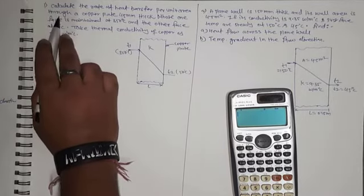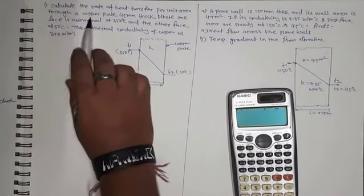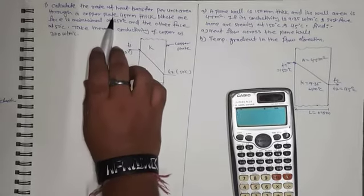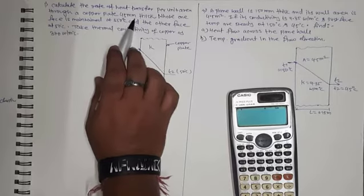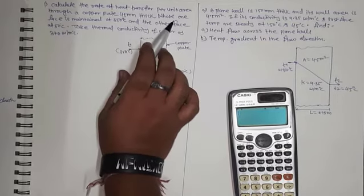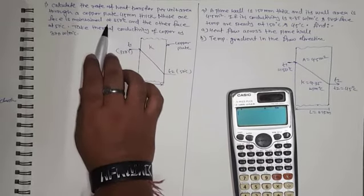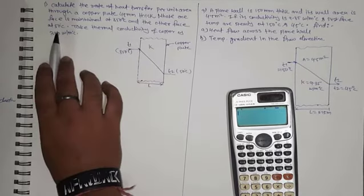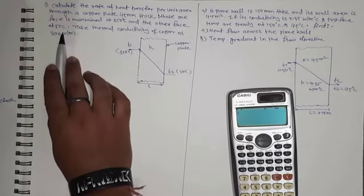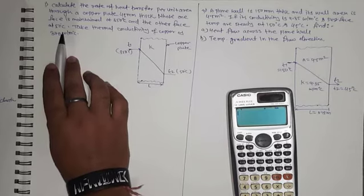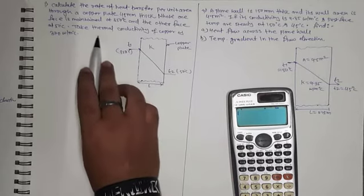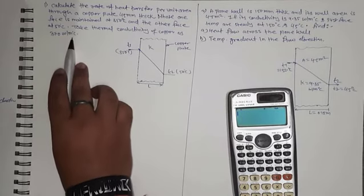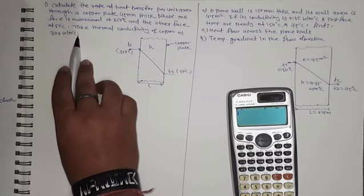The question is given: Calculate the rate of heat transfer per unit area through a copper plate 45 mm thick. One face is maintained at 350 degrees Celsius and the other face is at 50 degrees Celsius. Take the thermal conductivity of copper as 370 watt per meter degree Celsius.